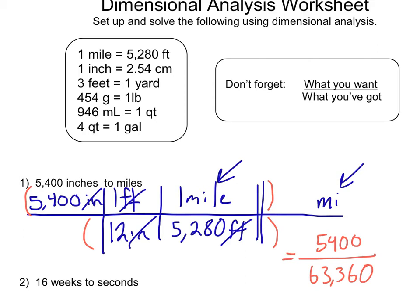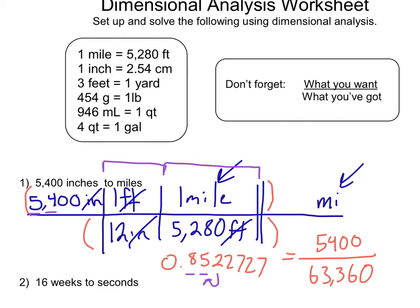The answer I get is 0.8522727. With sig figs, I always want to look at the number that was given to me — I see 54,000, which has two sig figs. These conversion factors don't count for sig figs; we only look at what we're given. So with two sig figs, I round to 0.85 miles.